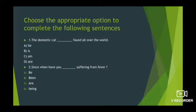See the first sentence: 'The domestic cat dash found all over the world.' Your options are: be, is, am, and are. And what is your answer? Is. B option is the correct option. The domestic cat is found all over the world.